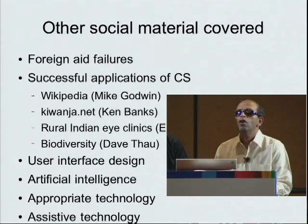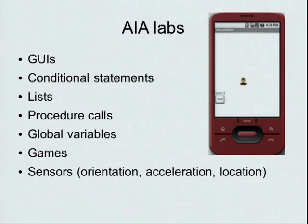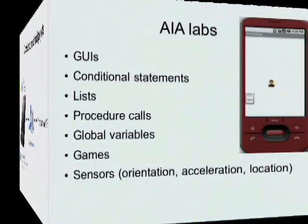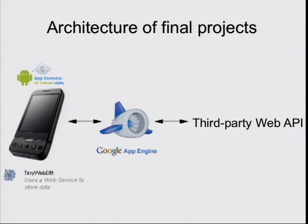We also looked at assistive technology, such as work allowing eyes-free access to Android phones. Of course, there was also a lot of technical content, which my fellow panelists will also speak about. While the lower-division students were learning App Inventor, the upper-division students were learning about cloud computing, including how to use Google App Engine and web services through APIs to build powerful web programs. For the final project, there were mixed teams of lower-division and upper-division students who brainstormed on applications together.